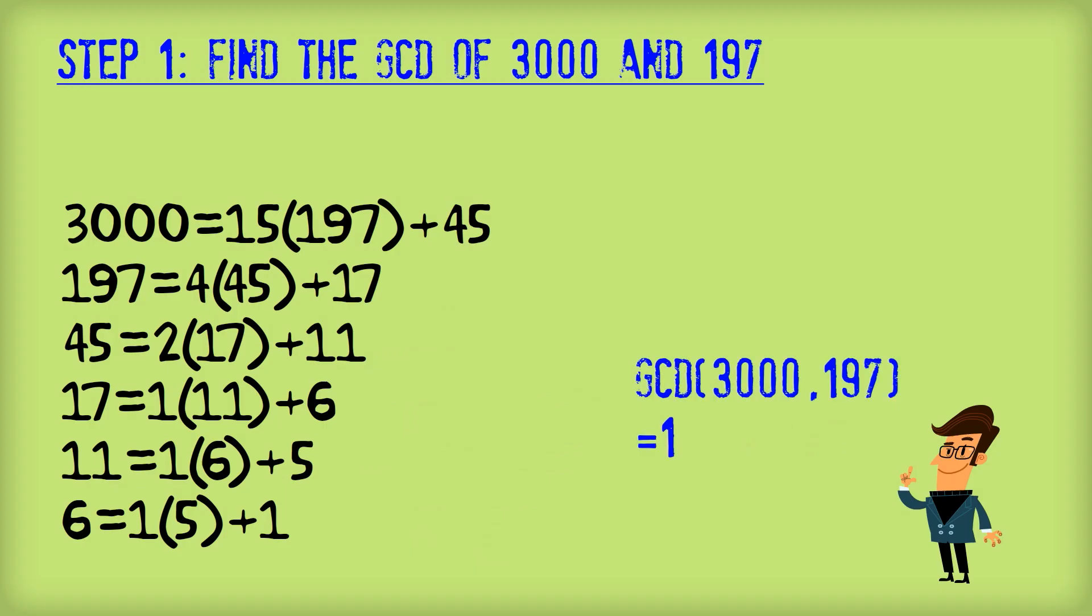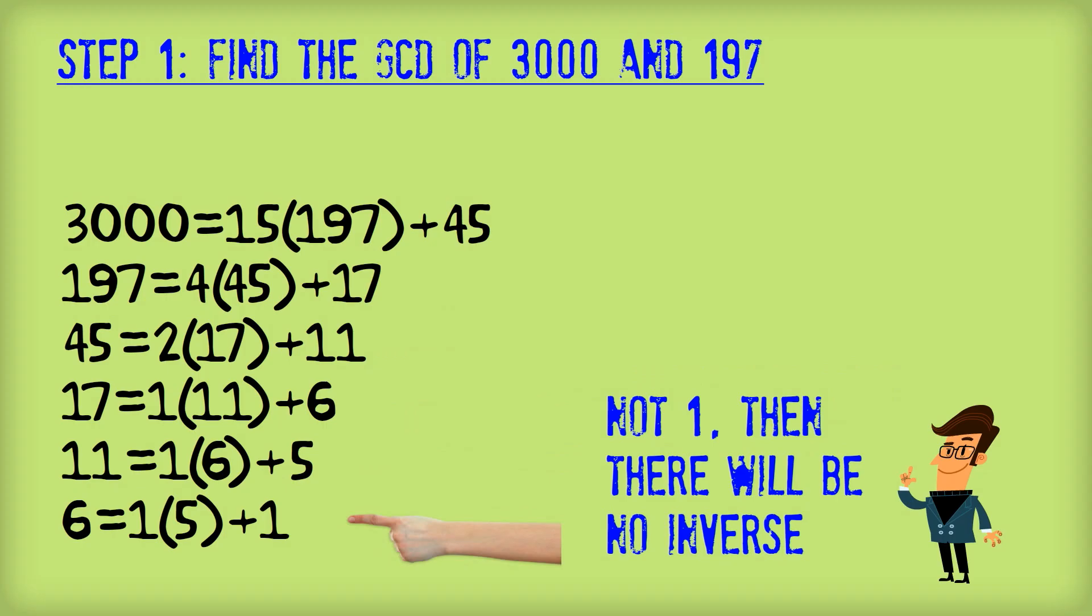So the GCD of 3000 and of 197 is the number 1. Now if you don't get 1 as the GCD, then there will be no inverse. But in this case, we've got 1.